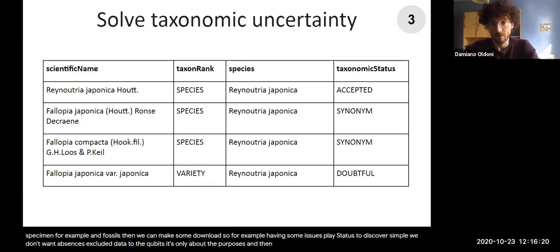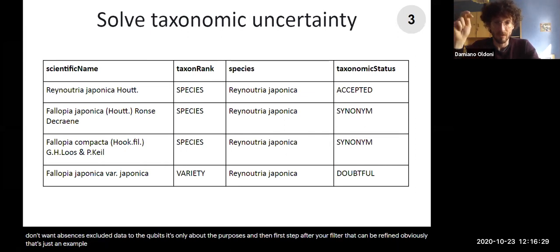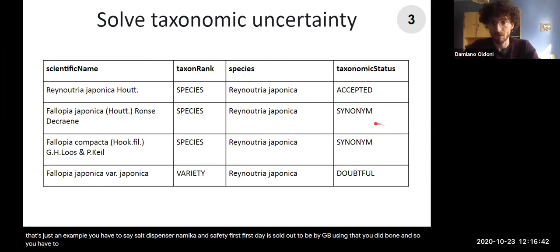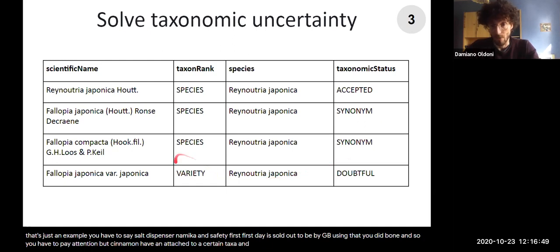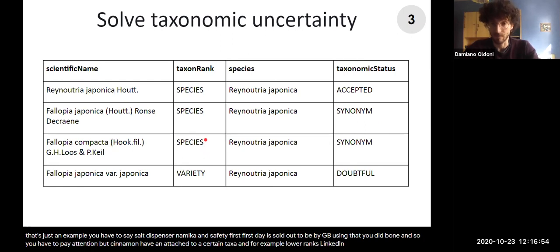Then the third step, after your filter that can be refined, obviously this is just an example, you have to solve this taxonomic uncertainty first. The taxonomic uncertainty is solved actually by using the GBIF backbone. So you have to pay attention that synonyms are attached to their accepted taxa, and for example lower ranks are linked to the species we're referring to.